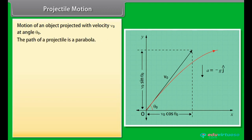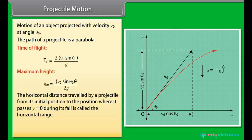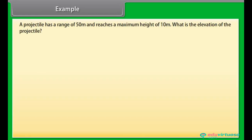Motion of an object projected with velocity nu naught and angle theta naught is shown in figure. The path of a projectile is a parabola. Time of flight of projectile is Tf is equal to 2 nu naught sin theta naught divided by g. Maximum height of a projectile is Hm is equal to nu naught sin theta naught square divided by 2g. The horizontal distance travelled by a projectile from its initial position to the position where it passes y is equal to 0 during its fall is called the horizontal range. Horizontal range of projectile is given by product of nu naught square and sin 2 theta naught divided by g.